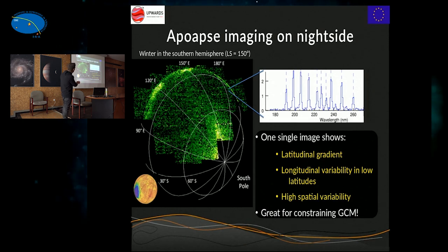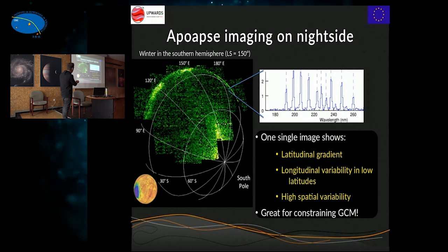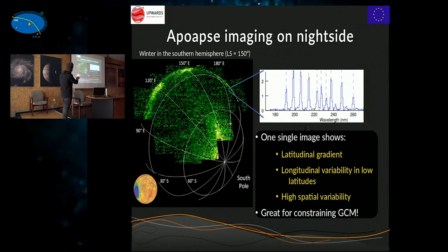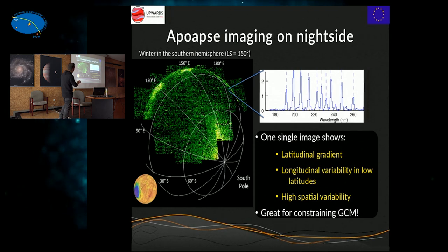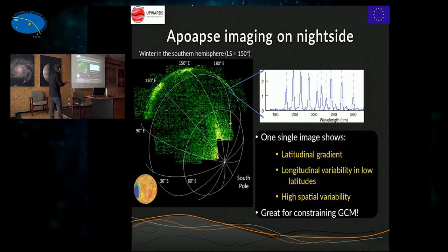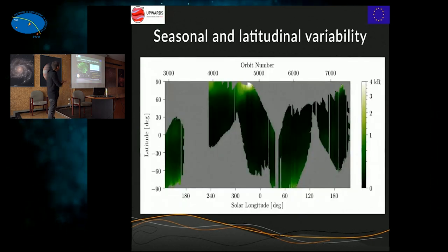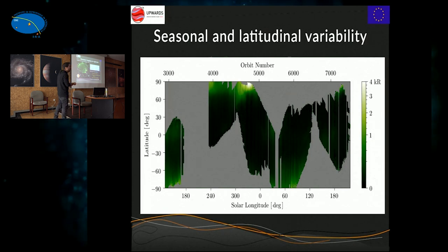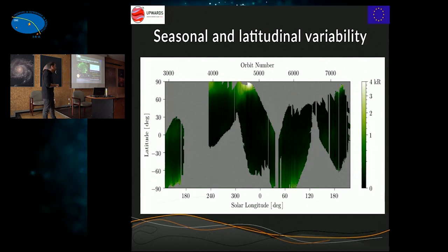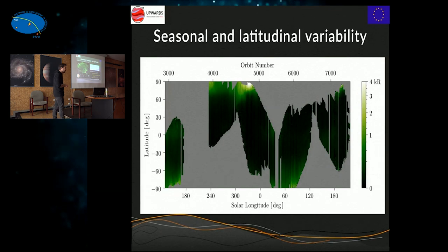The observations of interest to us are disk images taken when MAVEN is far from the planet. Using the scan mirror, you can make global images of the night side of the planet. You can see how the intensity increases toward the winter pole, with lots of spatial variability and areas of enhanced emission at low latitudes. In each pixel we have a full spectrum, so we can get the intensity emitted by the NO bands. In total, with these images covering almost more than one Martian year, we have around 30 million data points — almost 100,000 times more than we had before. This is really a revolutionary dataset to constrain our understanding of the planet.